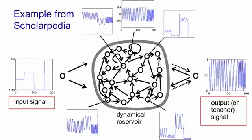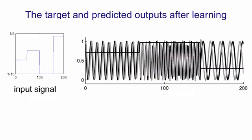All the other pictures are showing you the actual dynamics of individual units inside the dynamical reservoir. One thing to notice is that there are also connections from the output back to the reservoir. Those aren't always needed, but they help to tell the reservoir what output has been produced so far. Here's an example of what the system actually produces after it's learned. You can see that at the beginning it's producing a sine wave in phase, and at the end it's producing a sine wave of the right frequency, but the phase is wrong — that's because we weren't telling it what phase the sine wave should be in. So it's satisfying the requirements of producing an appropriate frequency.